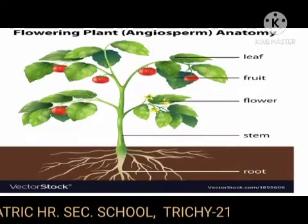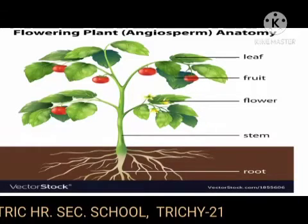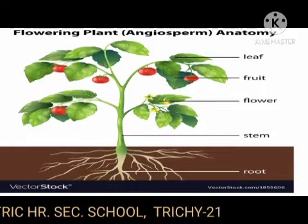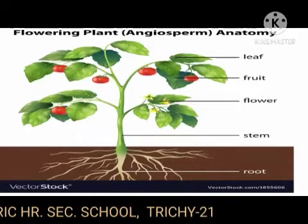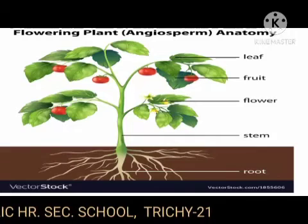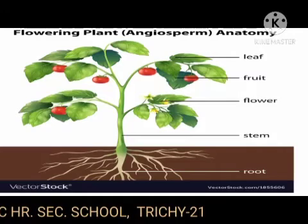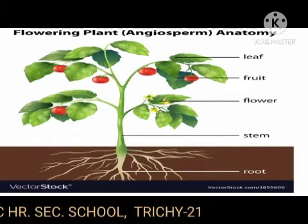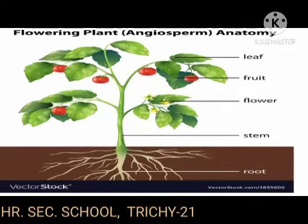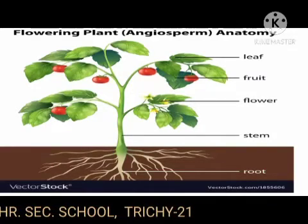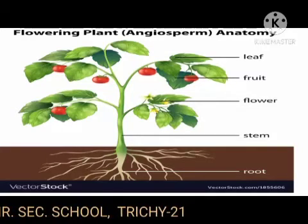Functions of the leaf — primary functions include photosynthesis, transpiration, gaseous exchange, protection of the buds, and conduction of water and dissolved solutes. Secondary functions include storage, protection, support, and reproduction.